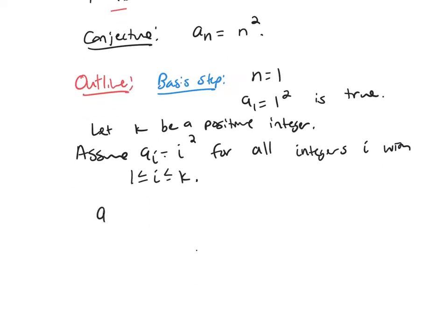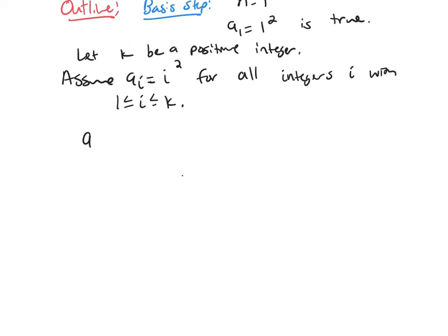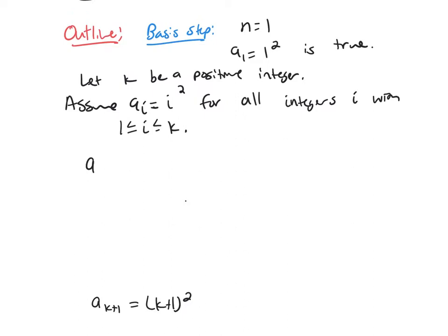And then we're going to keep in mind what are we trying to do. In the end, we're trying to say that a_{k+1} = (k+1)². So the first thing I'm going to do is use my recursive formula for a_{k+1}. It's 2a_k - a_{k-1} + 2.